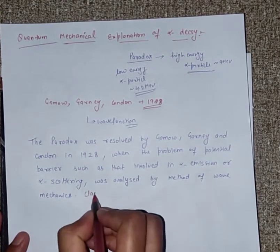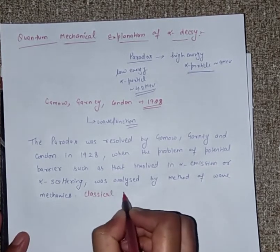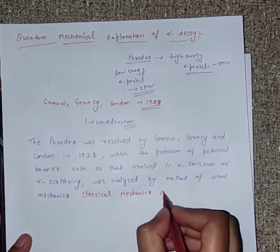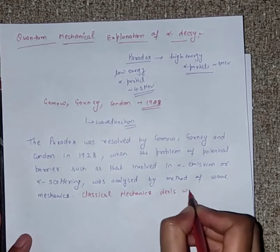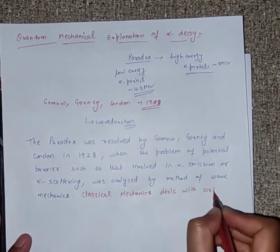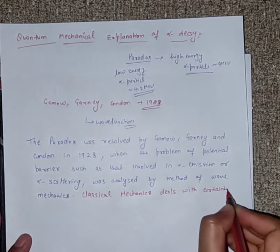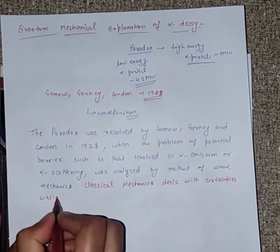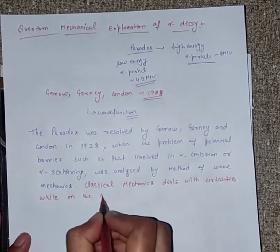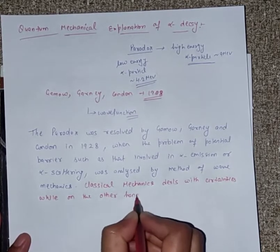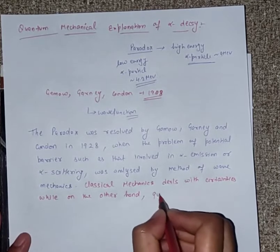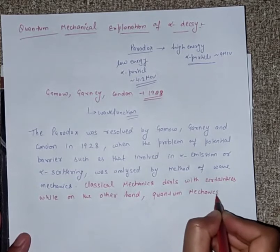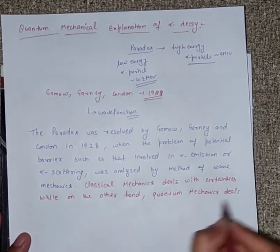Classical mechanics, which you have studied in first year BSC, deals with certain entities. While on the other hand, if we talk about quantum mechanics, quantum mechanics deals with probabilities.